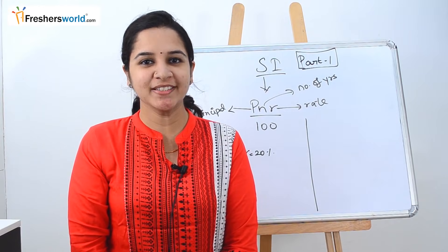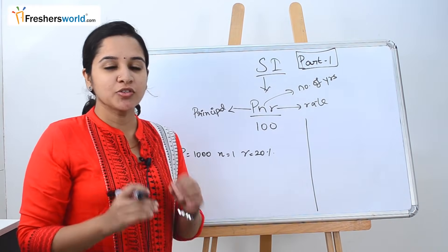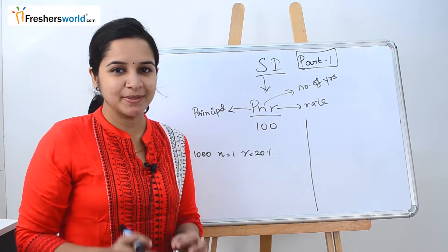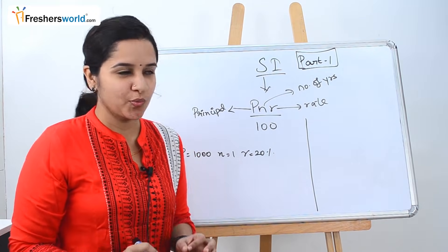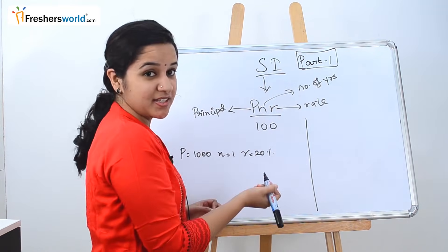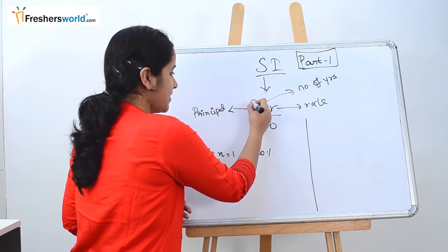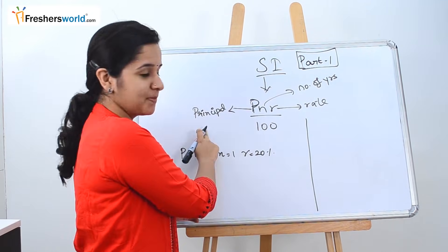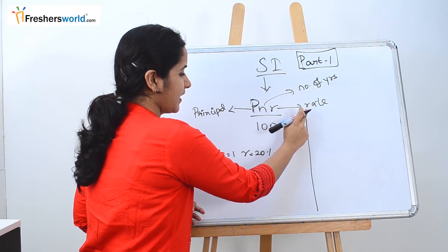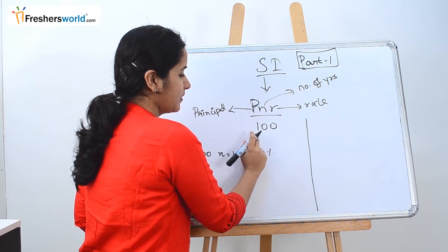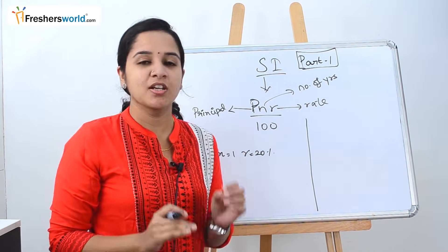The topic that we are going to look at today is simple interest. In order to solve the sums in simple interest, there is just one formula you need to know, which is: Simple Interest equals P times N times R divided by 100. P is the principal, N is the number of years, and R is the rate divided by 100. You should know this formula to find the simple interest.